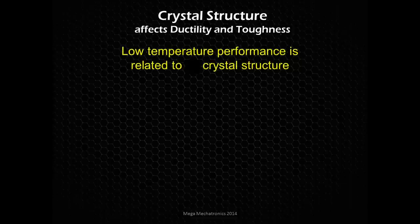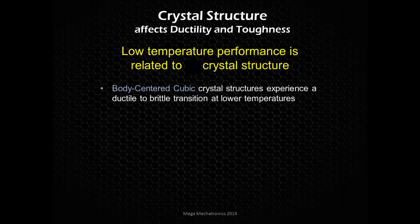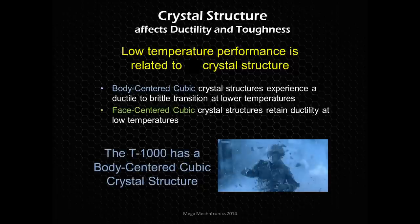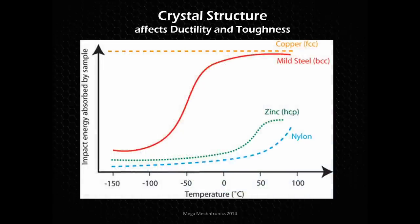The crystal structure — FCC or BCC — affects ductility and toughness at different temperatures. Body-centered cubic crystal structures experience a ductile-to-brittle transition at low temperatures. Face-centered cubic structures retain ductility at low temperatures. Looking at the chart: copper, which is face-centered cubic, is not affected by temperature. Mild steel, which is body-centered cubic, is highly affected and does show the ductile-brittle transition.